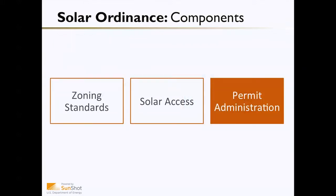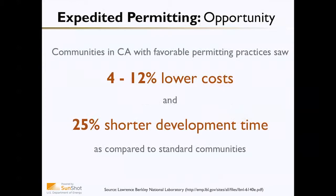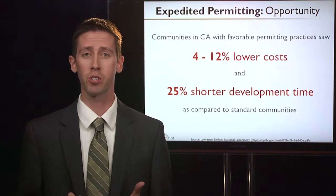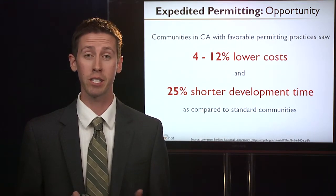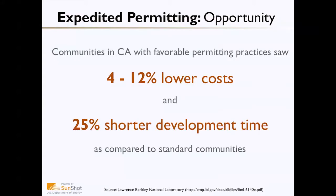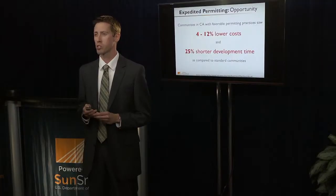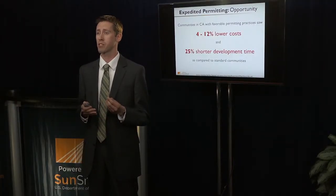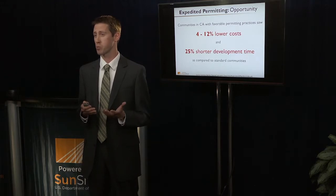Next we'll talk about permit administration. Expedited permitting can provide a tremendous opportunity to streamline the process and make it simpler and less costly for both homeowners and businesses as well as municipal staff. As an example, communities in California with favorable permitting practices saw between 4 and 12 percent lower costs for solar and a 25 percent shorter development time compared with communities using the standardized permitting process — a tremendous cost and time savings.